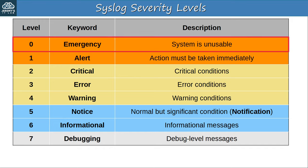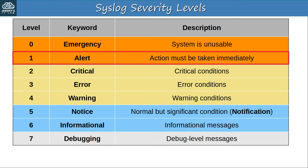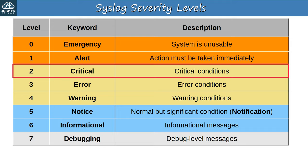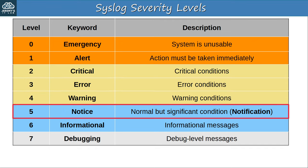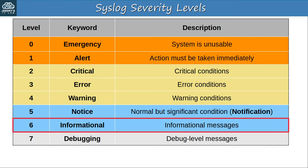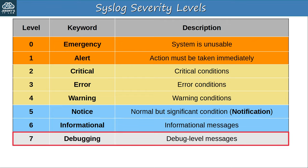Level 0 is emergency — events which render the system unusable. Level 1, alert, is for events for which action must be taken immediately. Level 2 is critical, with the description simply 'critical conditions.' Level 3 is error, and level 4 is warning. Level 5 is notice, used for messages representing a normal but significant condition. In the official RFC the keyword is 'notice,' but in the CLI of Cisco IOS the name is 'notification' — so make sure you know both names. Level 6 is informational, and level 7, the least severe, is debugging.